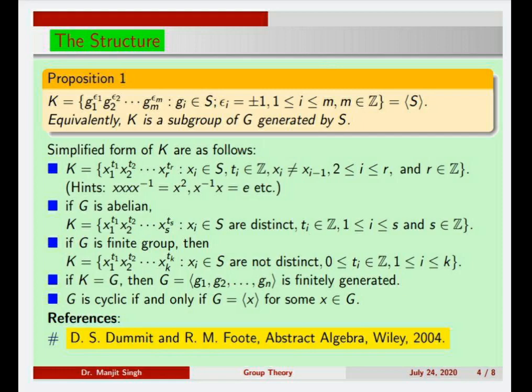When S generates G, we say G is finitely generated if S is a finite subset of G. G is cyclic if and only if G is generated by a single element of G.